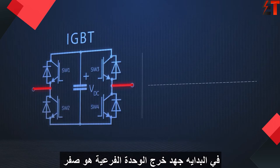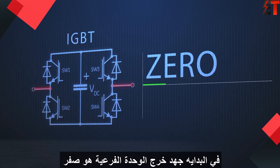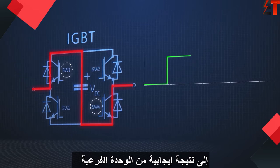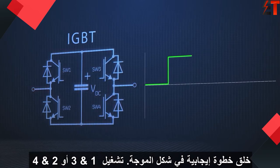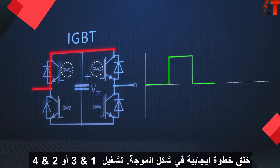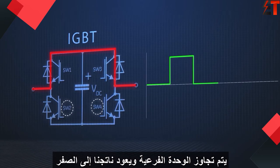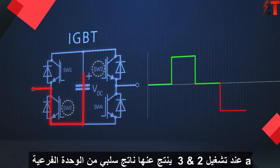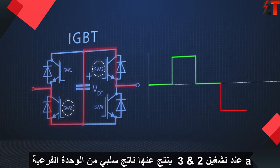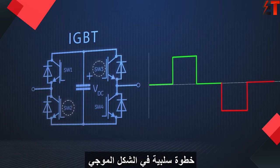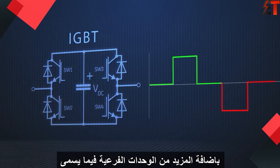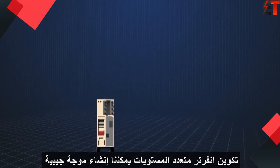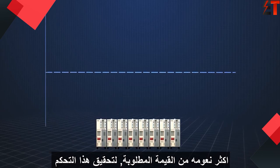Starting in the blocked state, the sub-module output voltage is zero. Turning on IGBTs 1 and 4 results in a positive output from the sub-module, creating a positive step in the waveform. Turning on 1 and 3, or 2 and 4, the sub-module is bypassed and the output returns to zero. Turning on IGBTs 2 and 3 results in a negative output from the sub-module and a negative step in the waveform.